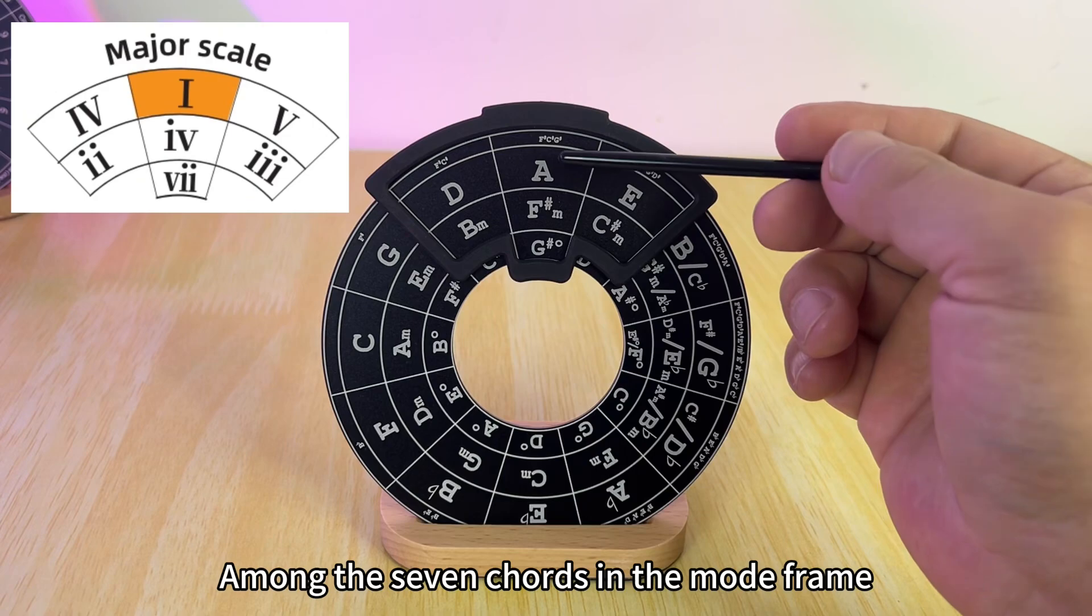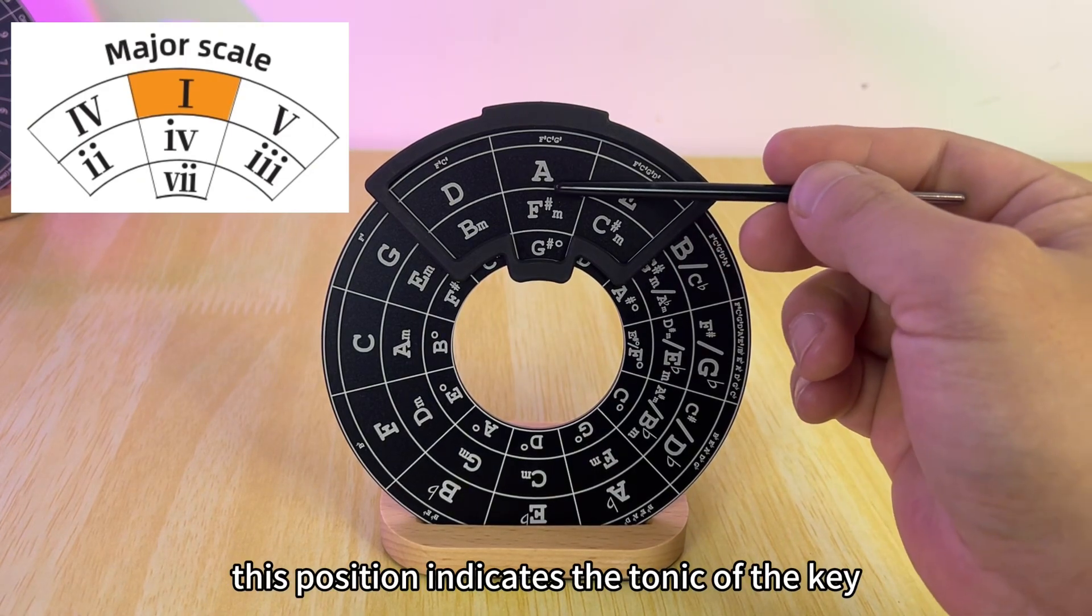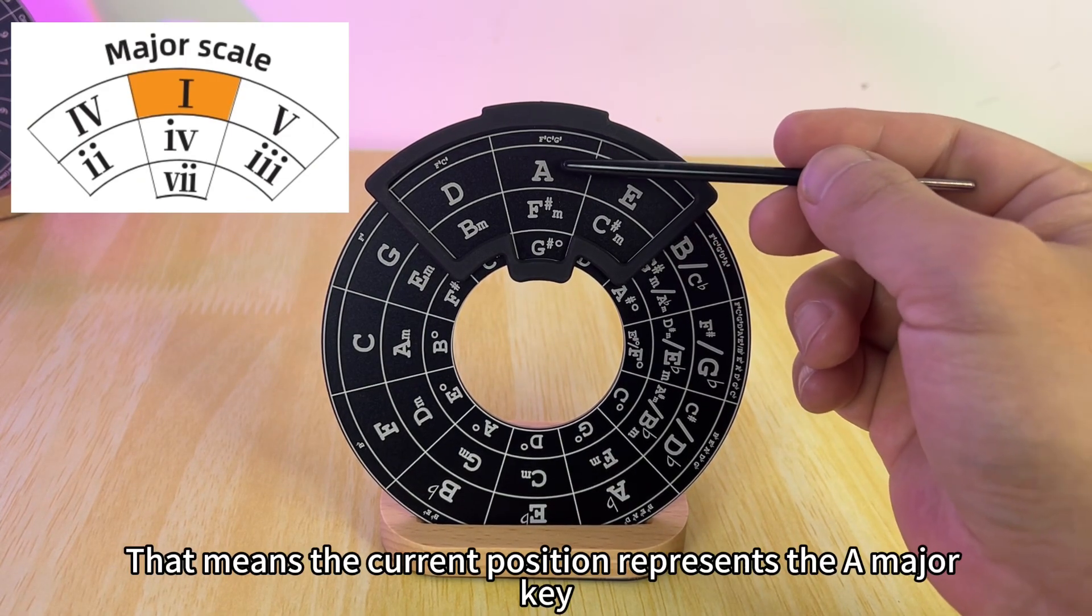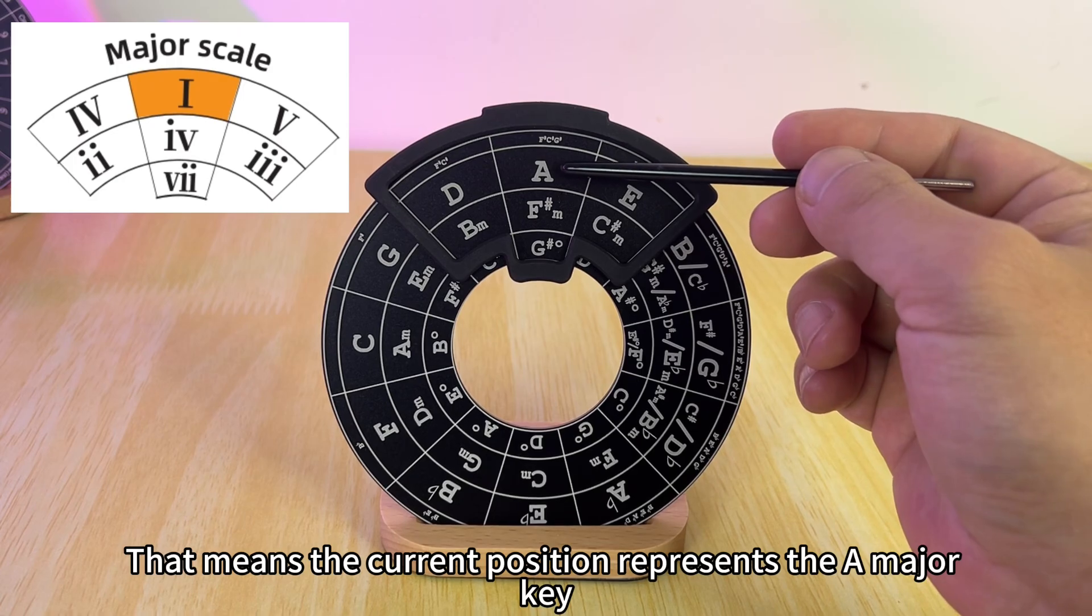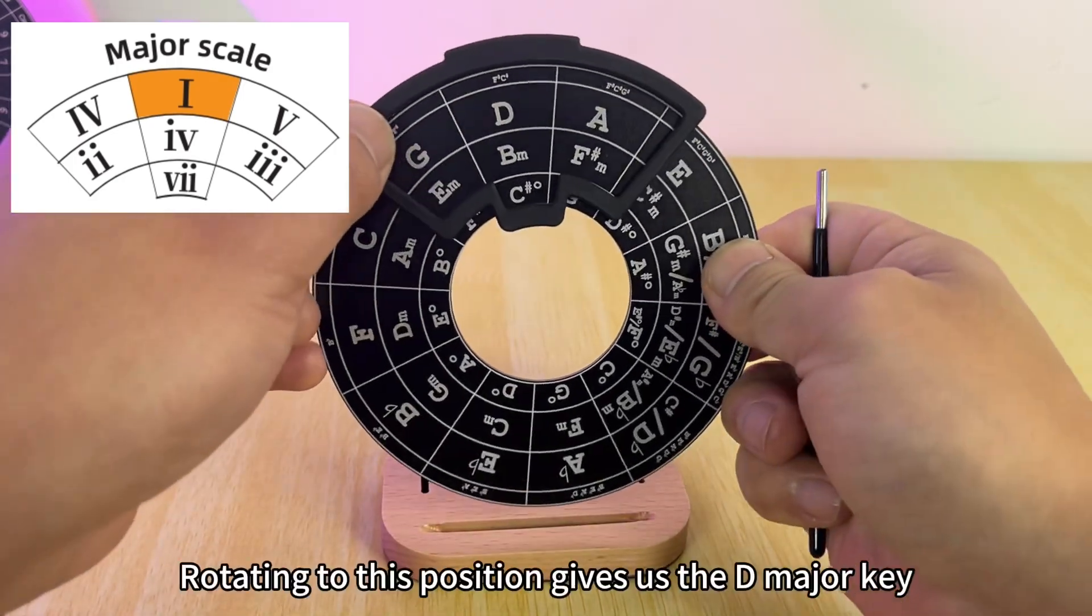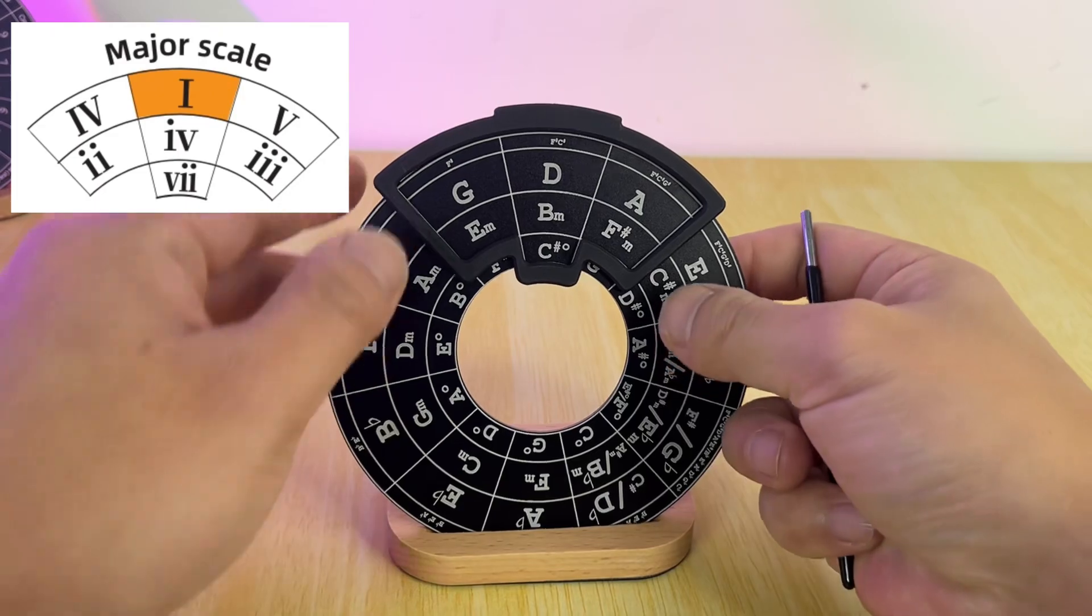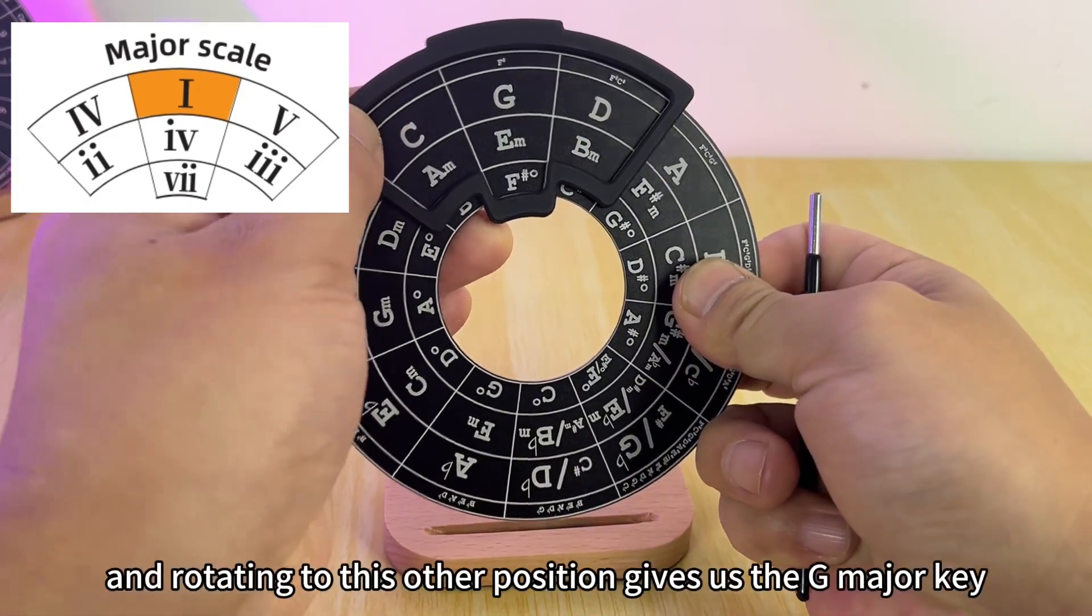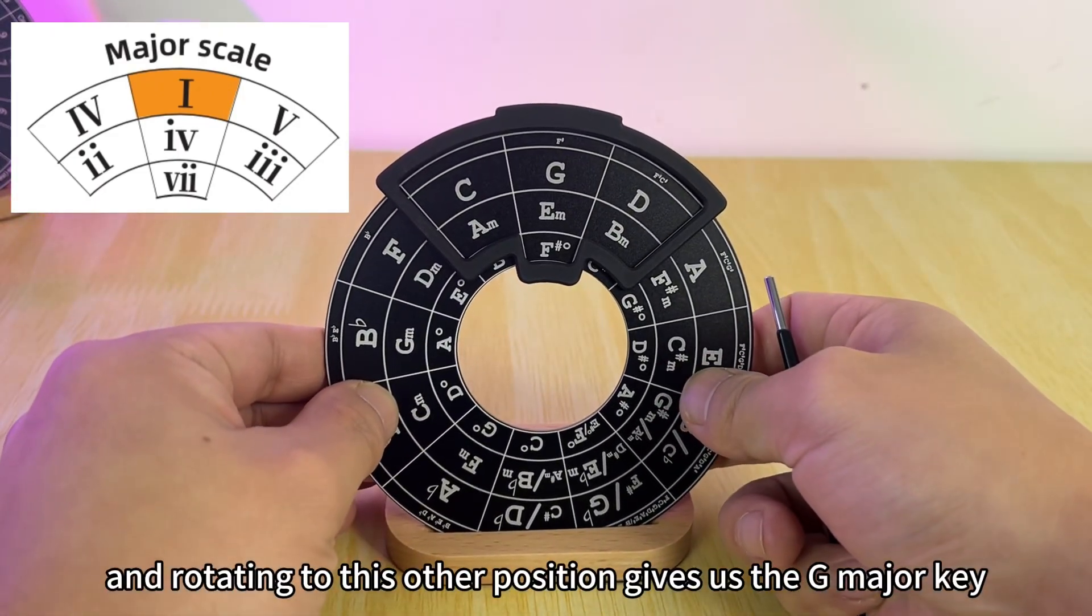Among the seven chords in the Mode Frame, this position indicates the tonic of the key. That means the current position represents the A major key. Rotating to this position gives us the D major key, and rotating to this other position gives us the G major key.